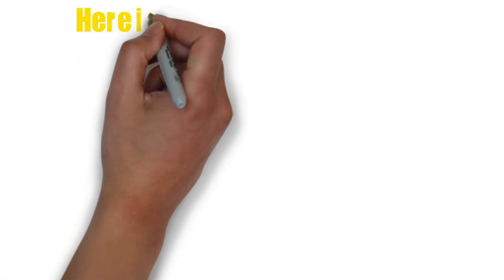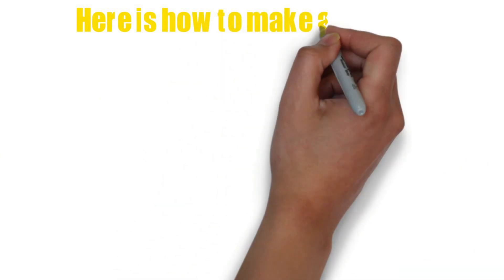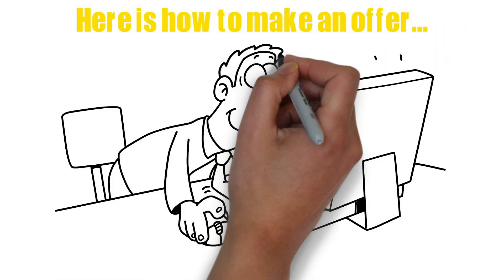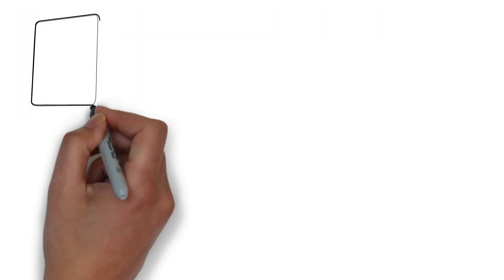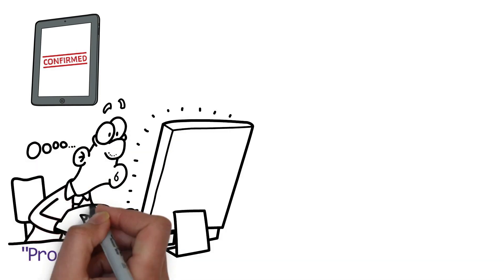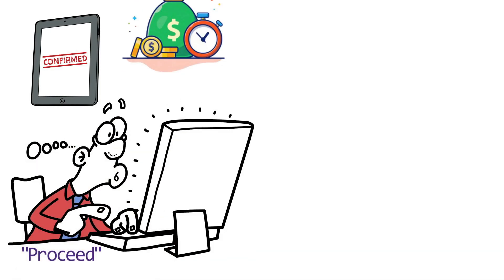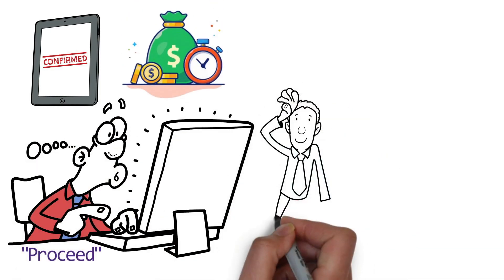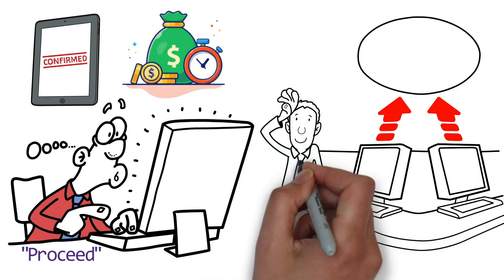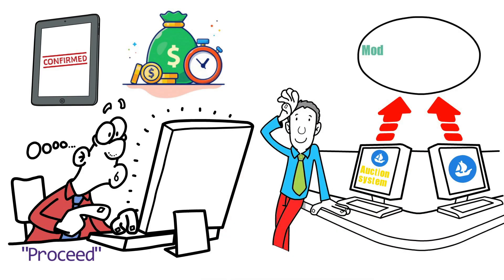When you found an NFT you like, click the Start Auction, then Auction to Proceed. OpenSea will present you with a confirmation screen. Click Proceed again to prompt your preferred wallet service one final time and move through payment. For this purchase, your purchase will be handled within OpenSea's auction system, and you can't modify your max bid or set a custom interval.